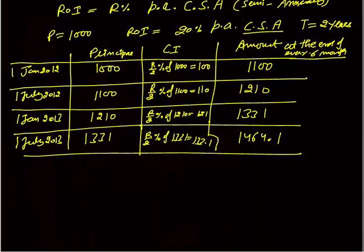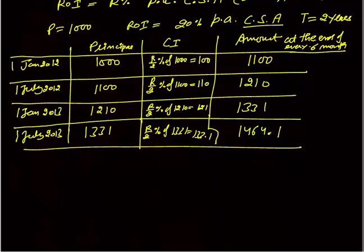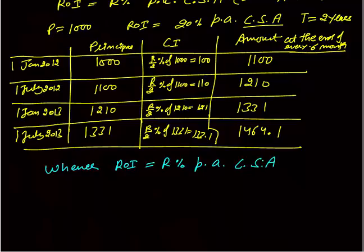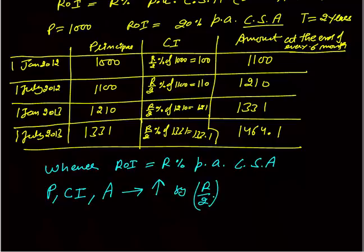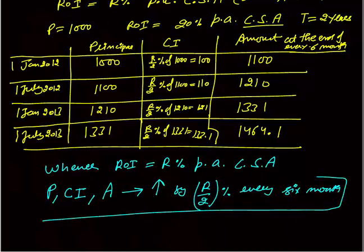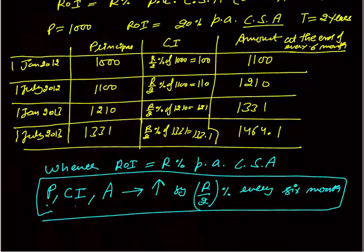The most important observation from this table is that in exams you don't have to make this table — it is just for understanding the compound interest concept. Whenever your rate of interest is R% per annum compounded semi-annually, your principal, compound interest, and amount will increase by R by 2% every 6 months.